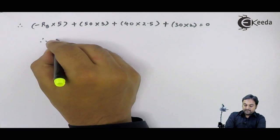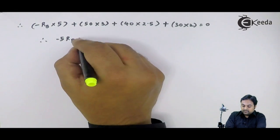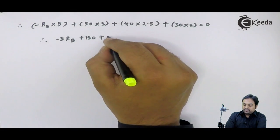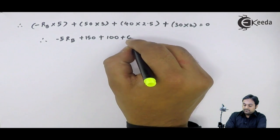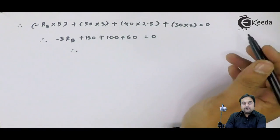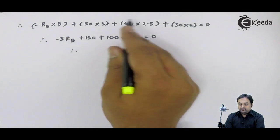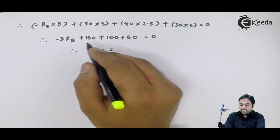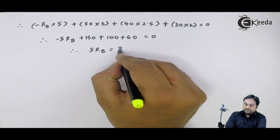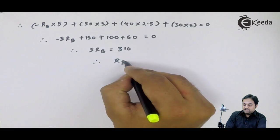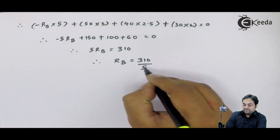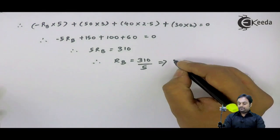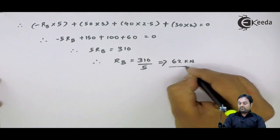Therefore, this will be minus 5 RB plus 150 plus 100 plus 60 equals 0. If I shift 5 RB to the other side, that would be positive. So 5 RB equals 310. Hence RB value is equal to 310 divided by 5, which gives RB equals 62 kilonewtons. My first answer.